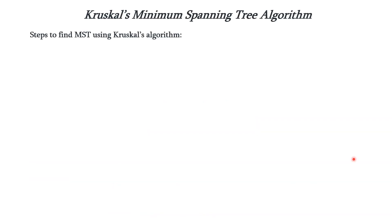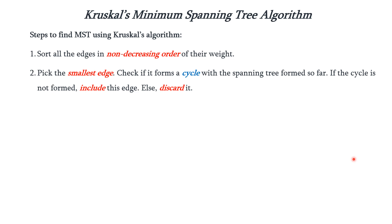Now we will see the steps to find MST using Kruskal's algorithm. The first step is to sort all the edges in non-decreasing order of their weight, that is in ascending order. After sorting, we have to pick the smallest edge — obviously the first one will be the smallest since we have arranged all edges in ascending order. After picking the smallest edge, we check if it forms a cycle with the spanning tree formed so far. If it is not forming any cycle, we include it in the spanning tree; otherwise we discard it.